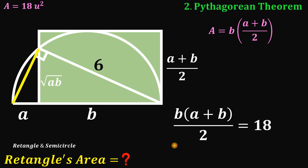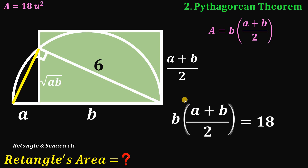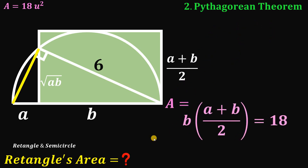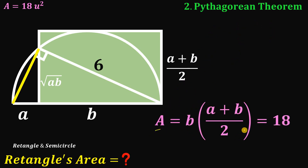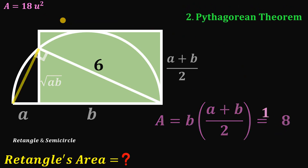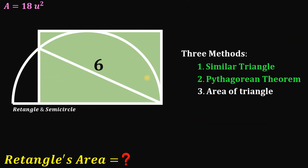We can rewrite the left-hand side as b multiplied by (a + b)/2, which is exactly the area of the rectangle. So using the second method we also get that the area of this rectangle is 18 square units — the same answer as before.